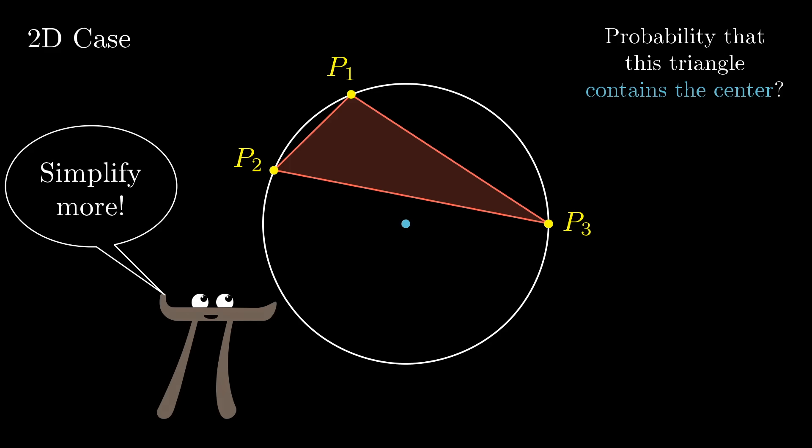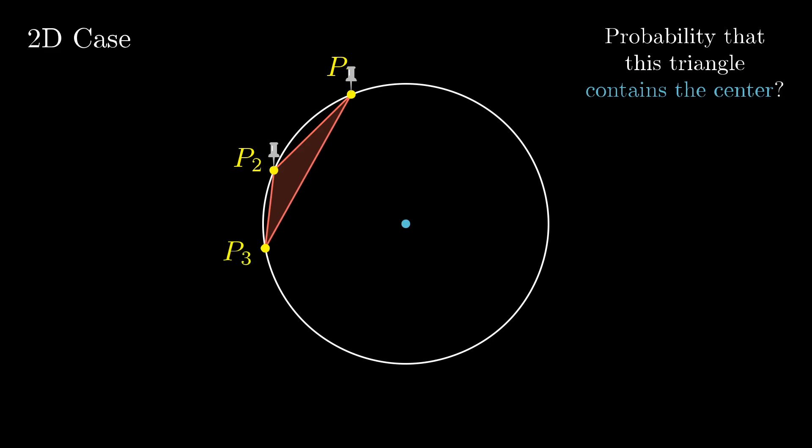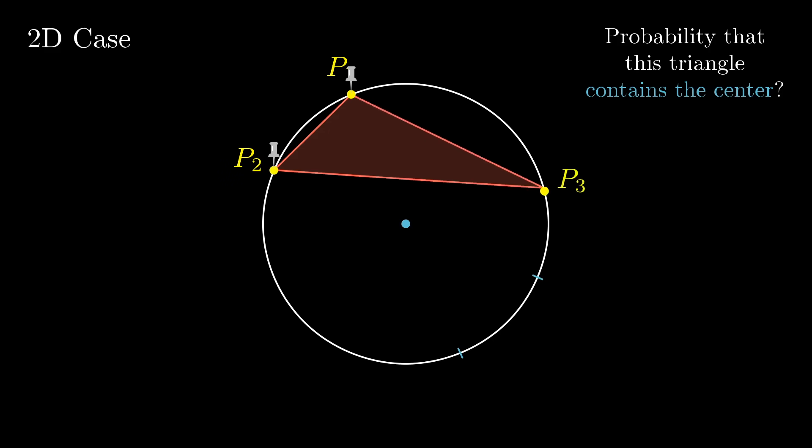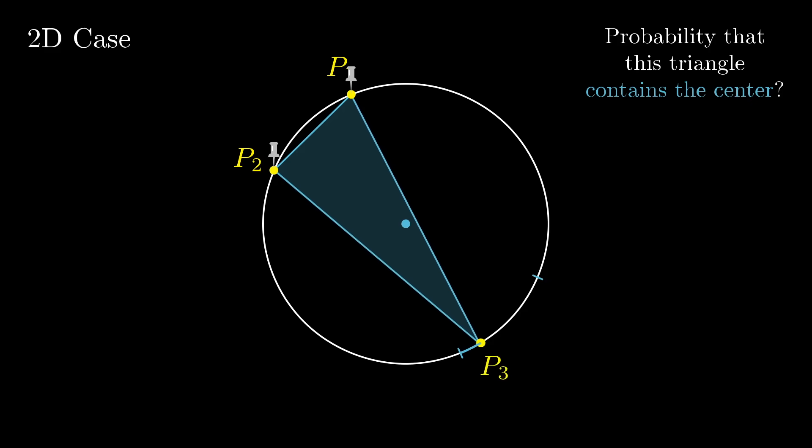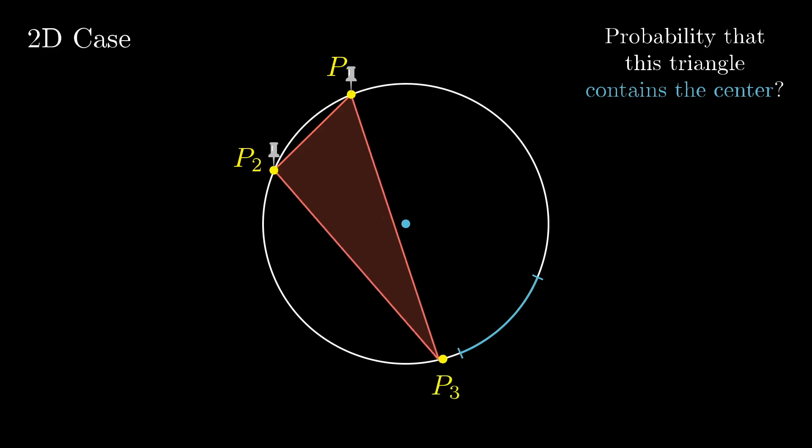Well, maybe you imagine fixing p1 and p2 in place, and only letting that third point vary. And when you do this, and you play around with it in your mind, you might notice that there's a special region, a certain arc, where when p3 is in that arc, the triangle contains the center, otherwise not.